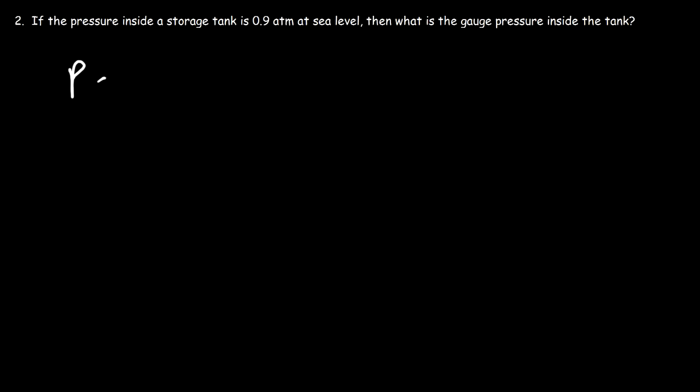Number two: if the pressure inside a storage tank is 0.9 atm at sea level, then what is the gauge pressure inside the tank? This question is very similar to the last problem, so we can use the same formula. The gauge pressure is the difference between the absolute pressure, or total pressure, and the atmospheric pressure.